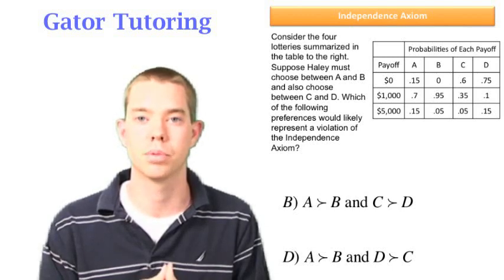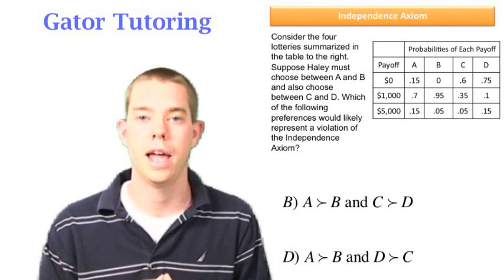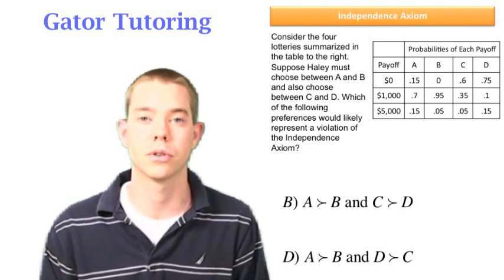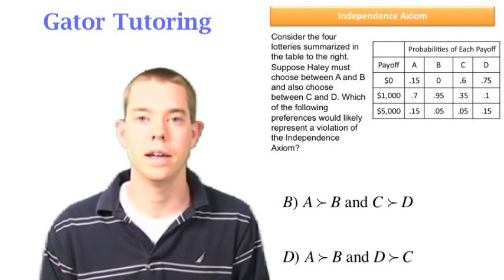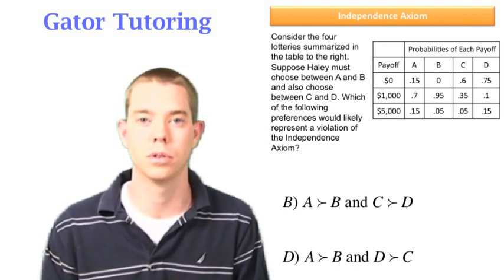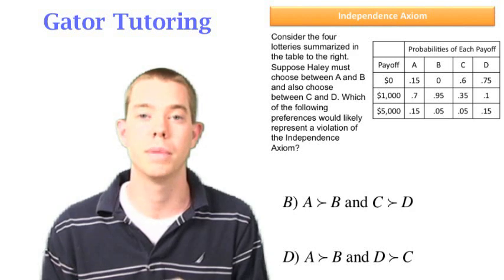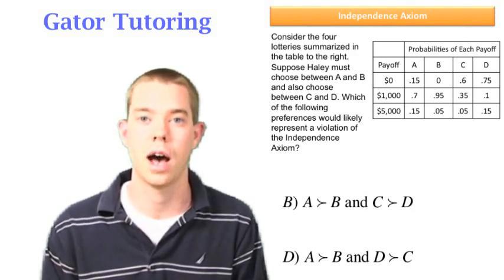Option D says we do prefer A to B, and we prefer D to C. This is also consistent with our expected utility model. And this is because A is a more risky, higher expected wealth gamble. If we prefer that to B, it would make sense that we also prefer D to C, where D is the more risky, higher expected wealth gamble.